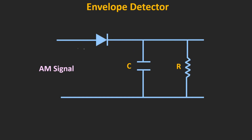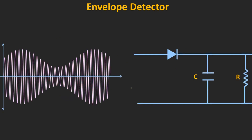During forward bias, there will be no voltage drop across the diode, and in reverse bias it acts as an open circuit. When the AM signal is positive, the diode conducts and acts as a short circuit, so the capacitor charges to the input voltage. Since the forward resistance of the diode is very small, the capacitor charges very quickly — it follows the input signal and gets charged up to the peak voltage.